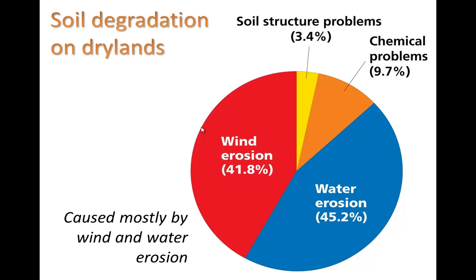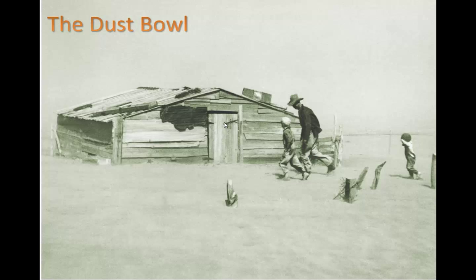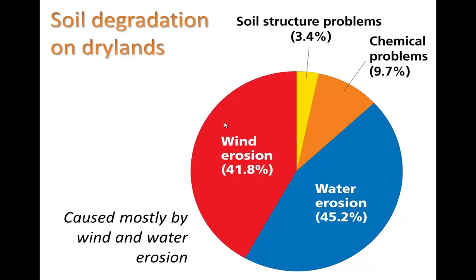On dry lands, most soil degradation is caused by two things: wind erosion and water erosion. To some degree, there are also chemical problems where the soil gets contaminated, and soil structure problems like compaction of the soil.